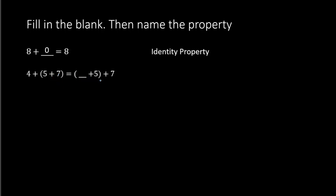The blank would be zero because 8 plus 0 equals 8. This property is your identity property because your identity property says that adding zero does not change the identity or value of the original number. Our second question, we see 4 plus and parentheses around 5 plus 7. Over here we have a blank plus 5 in the parentheses and then plus 7 on the outside. The number that is missing on the right side is the number 4.